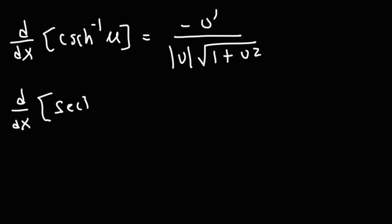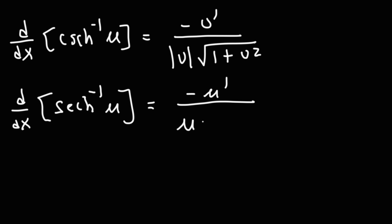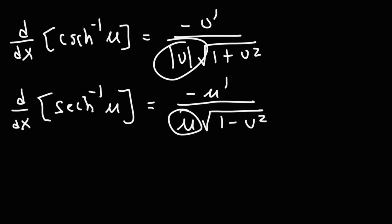For secant, it's going to be very similar: negative u prime over u times the square root of 1 minus u squared. For some reason, it doesn't have the absolute value here, as in the case of inverse hyperbolic cosecant.